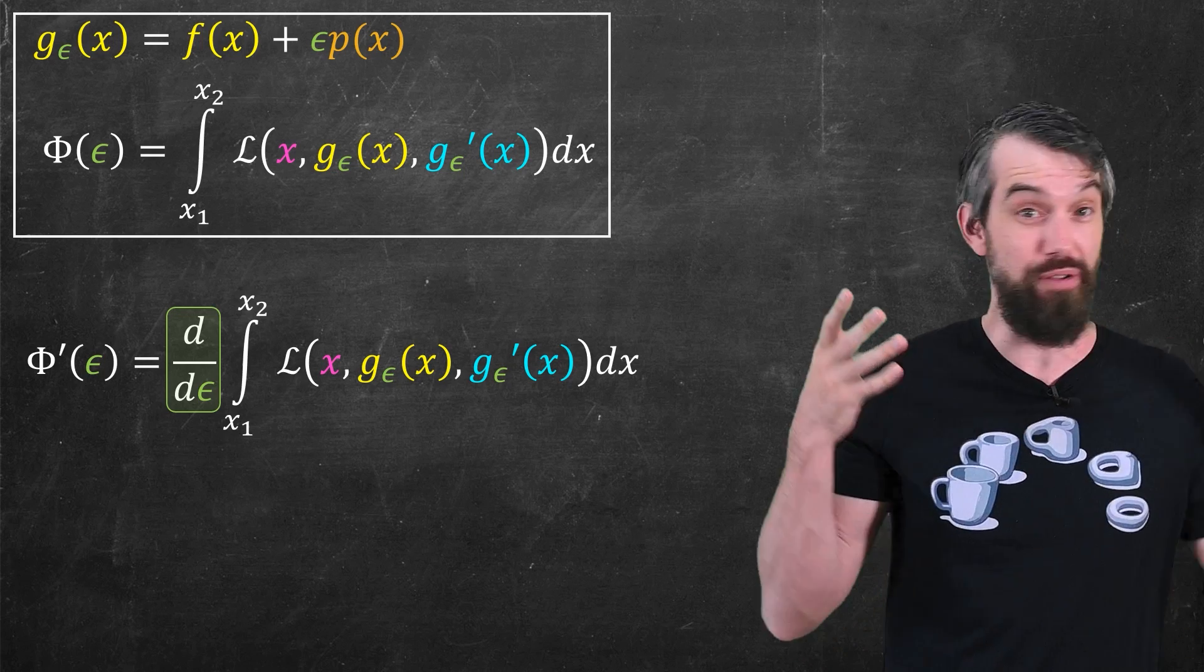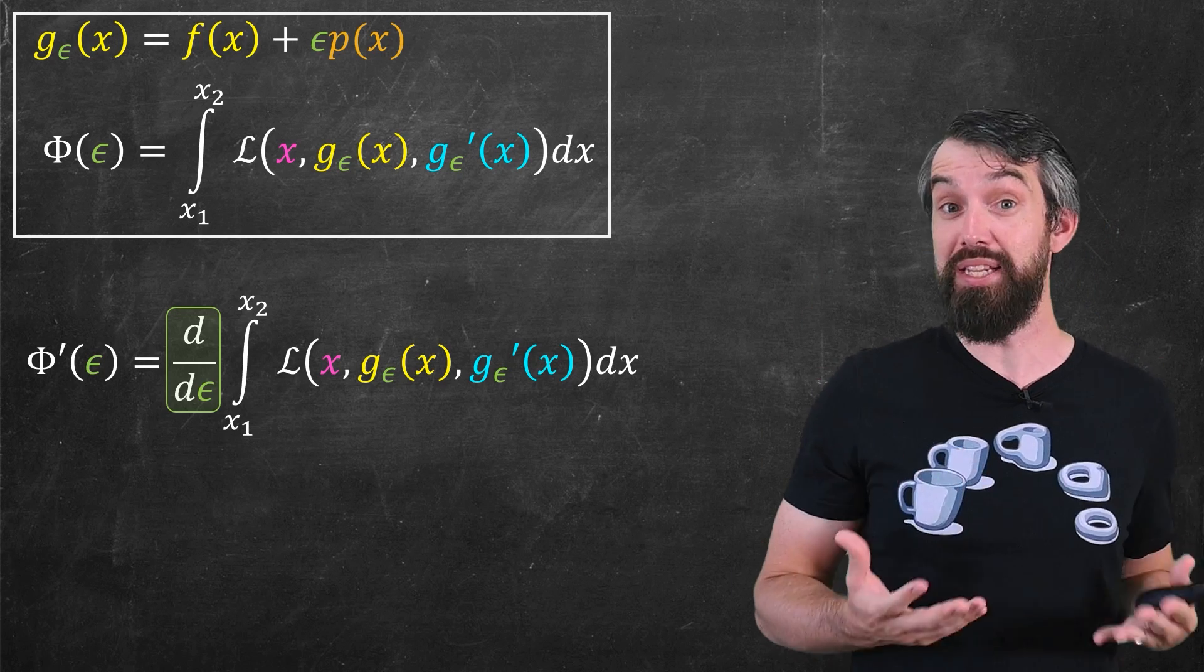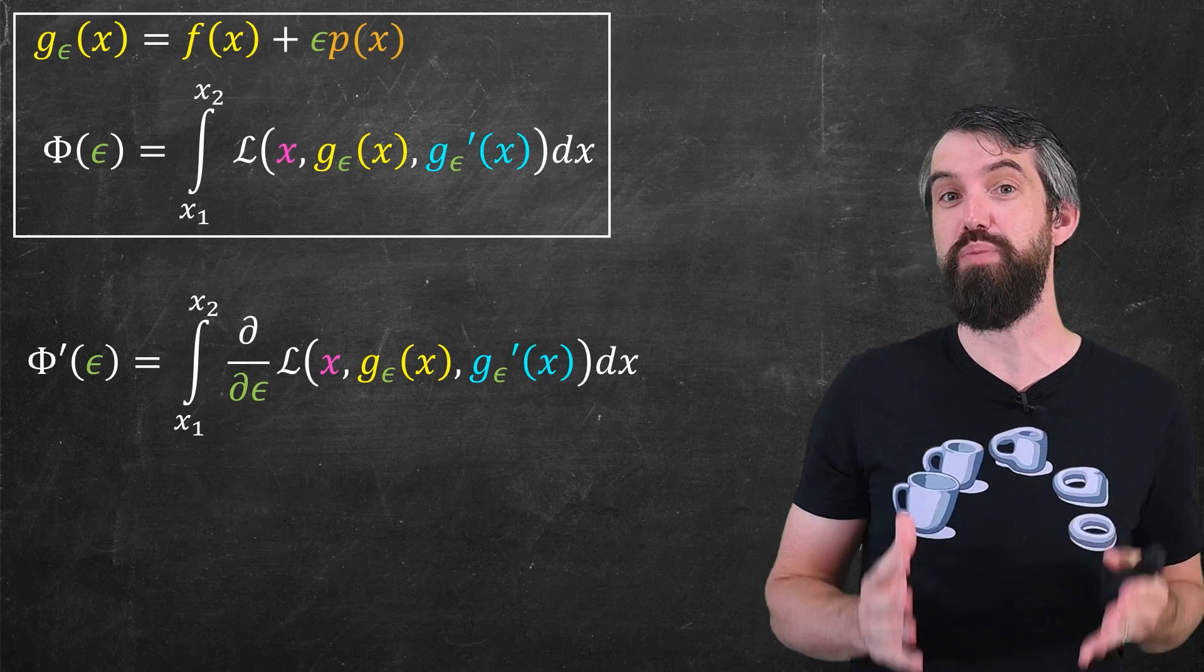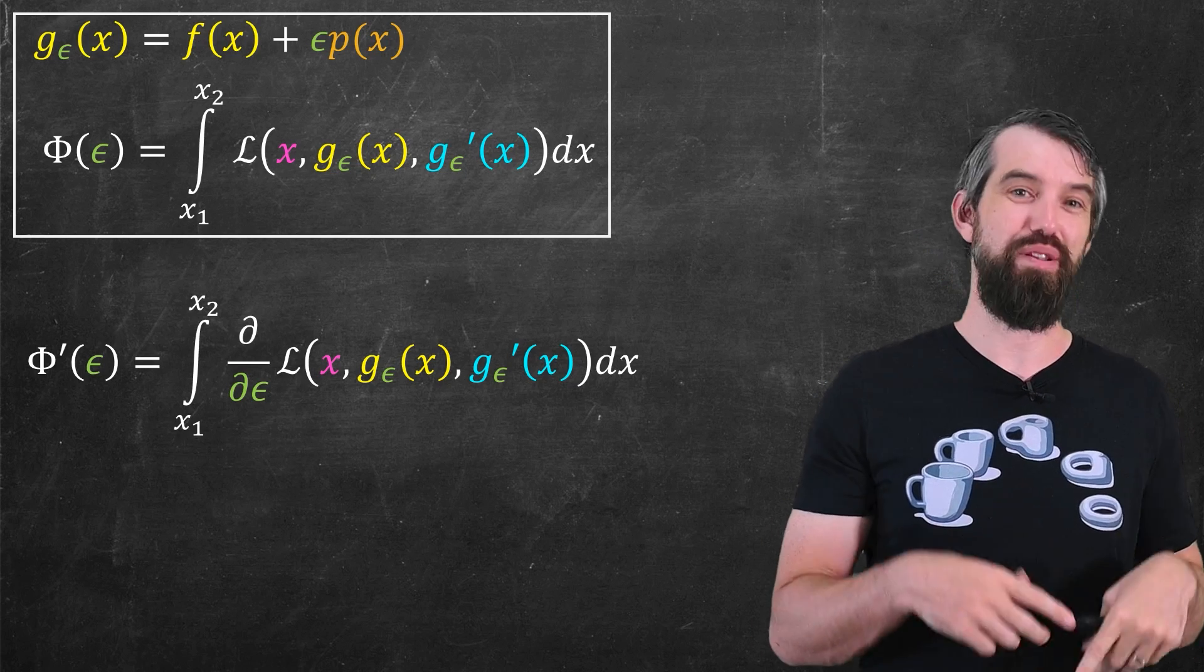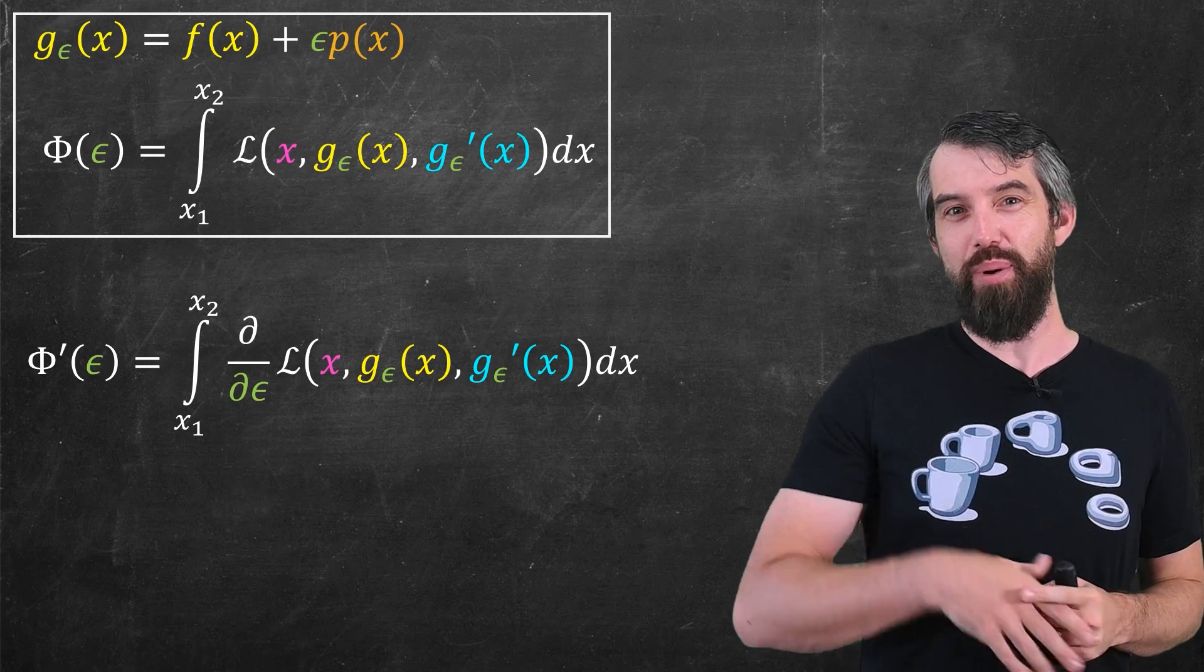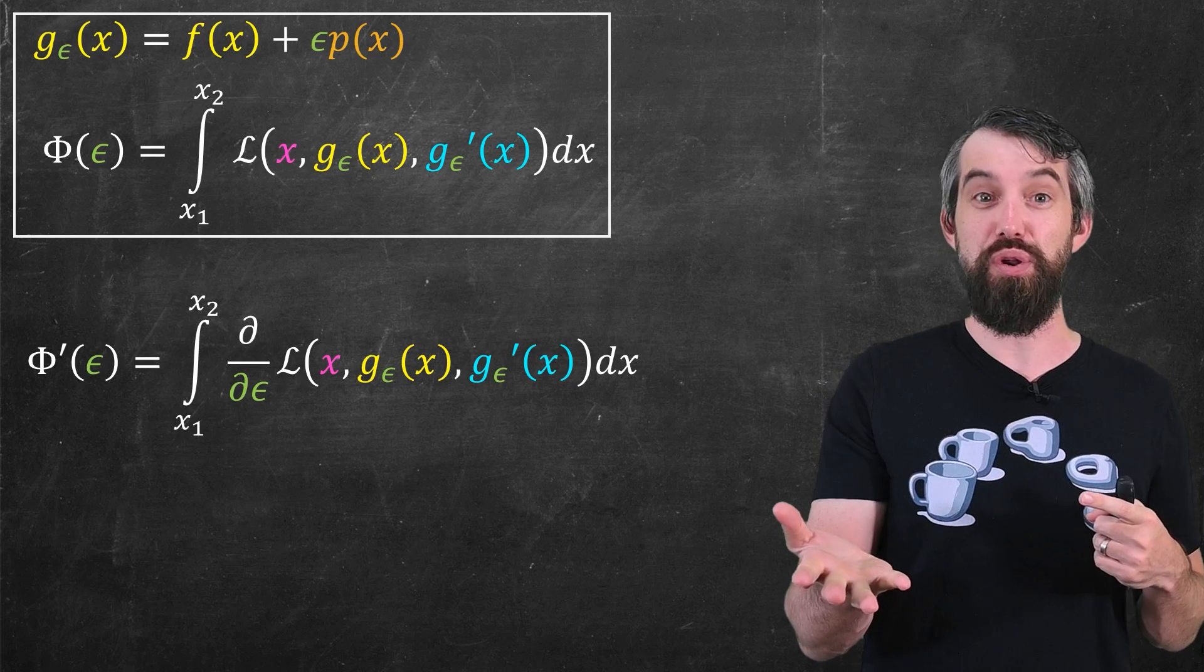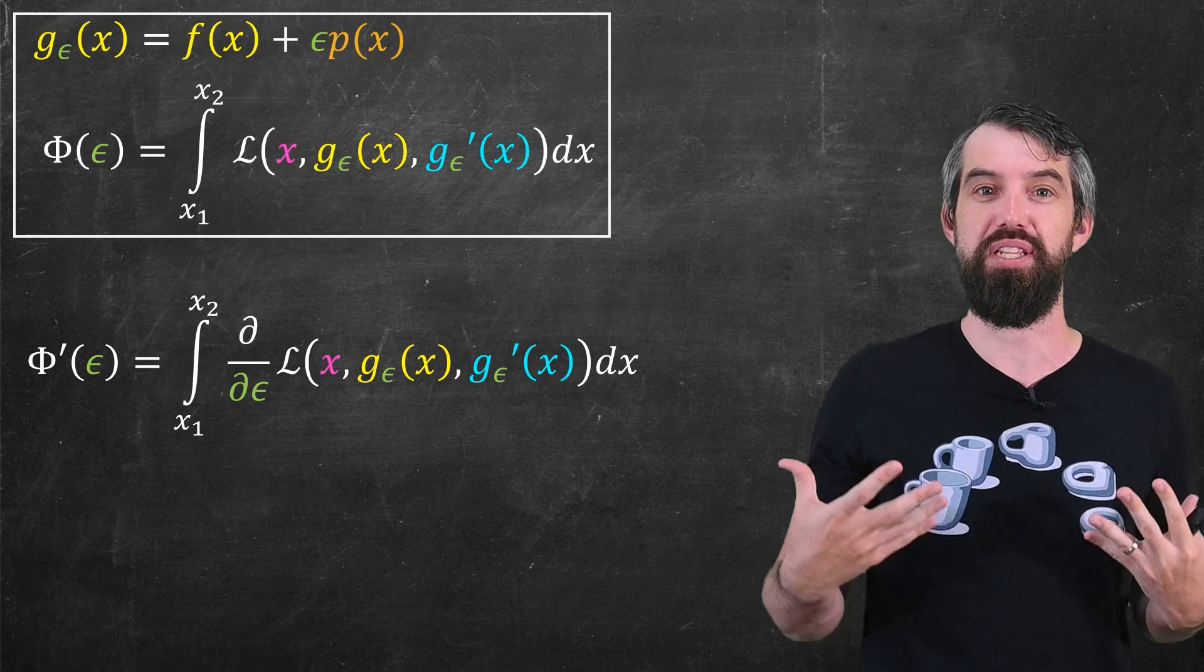Now, the first thing to note is that this derivative with respect to ε, I can move it inside of the integral. The integral is an integral with respect to x, and I'm going to have some niceness conditions, which I'm not going to worry about too much in this video on the Lagrangian itself. Note that I have changed my notation from a full derivative with respect to ε, which was appropriate outside of the integral. But when it's inside of the integral, the Lagrangian depends on ε, yes, but it also depends on x. There's multiple variables floating around, so I'm going to use a partial derivative with respect to ε, so we're very clear that this is a multivariable function.